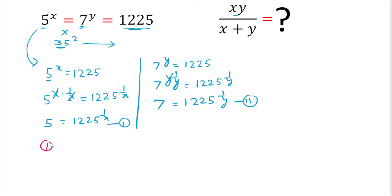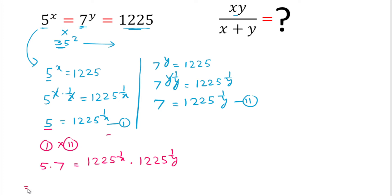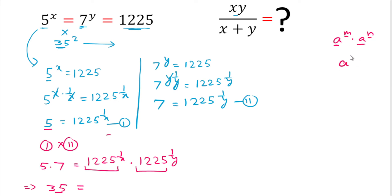Now we multiply equation 1 with equation 2. On the left-hand side we have 5 times 7. On the right-hand side we have 1225^(1/x) times 1225^(1/y). Since the bases are the same, we add the exponents: 1225^(1/x + 1/y). So 35 equals 1225^(1/x + 1/y). Since 1225 is the square of 35, we write 35 equals 35² raised to the power (1/x + 1/y).